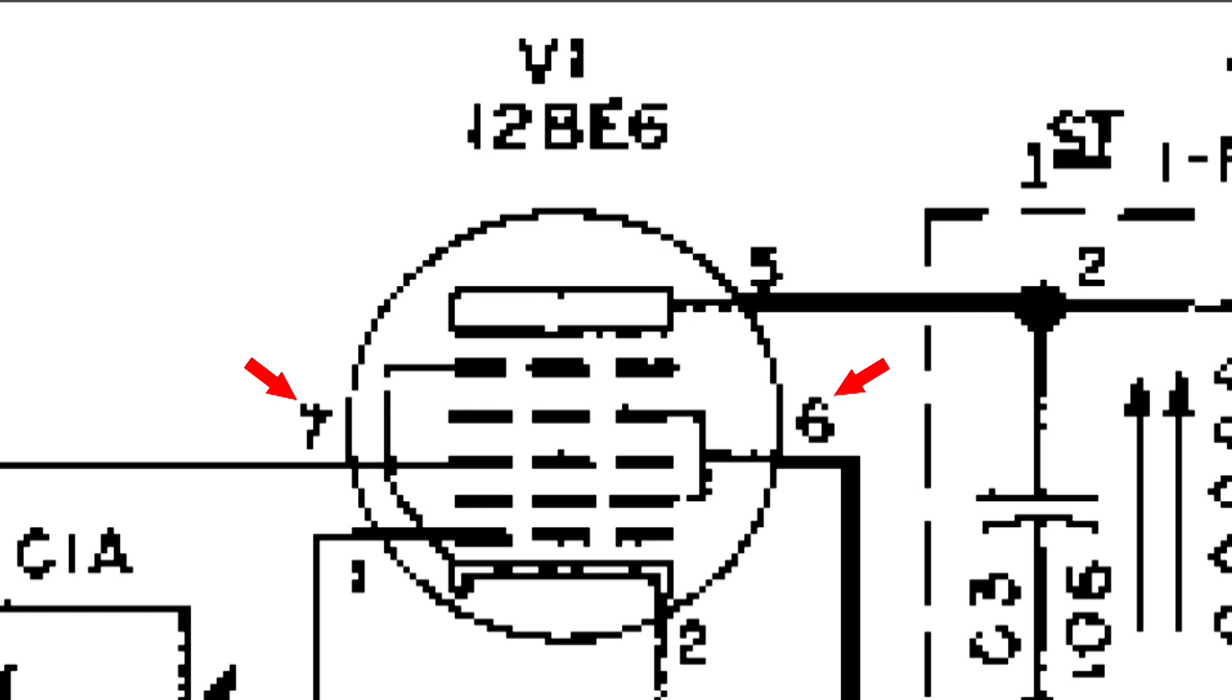It also helps mix the signal from the oscillator and the radio station. This grid is connected directly to the cathode, so it is negative, and what that's for is sometimes electrons can bounce off the plate rather than being absorbed. And what that grid does, it forces those electrons that bounce off back to the plate.